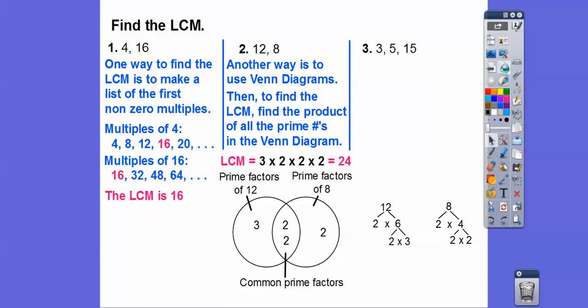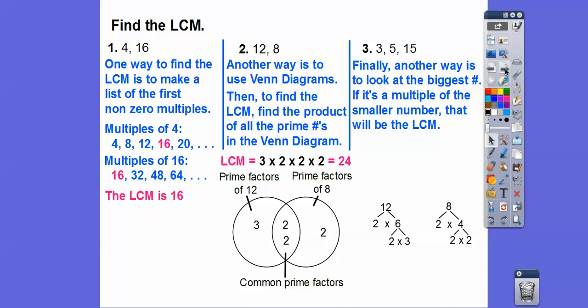And then another way is to look at the biggest number right here. The biggest number is 15. If it's a multiple of the smaller numbers, then that's going to be the least common multiple. So since 15 is a multiple of 3 and 5, in fact it's 3 times 5, then the LCM is 15.